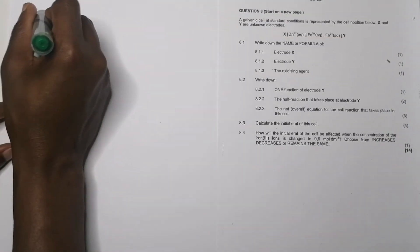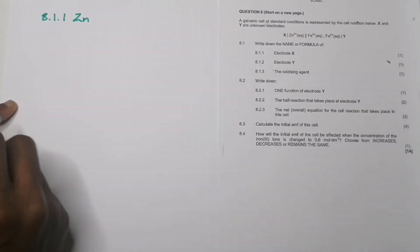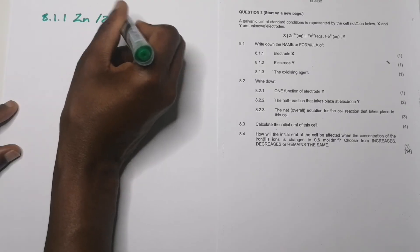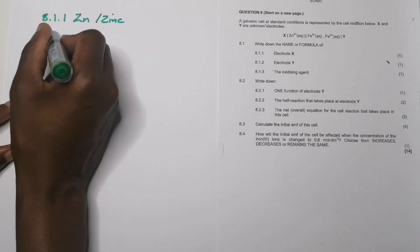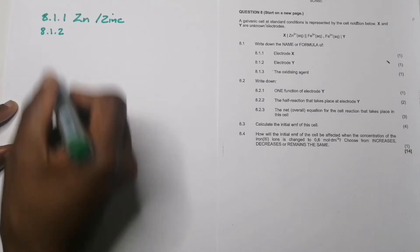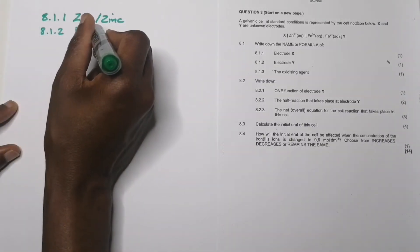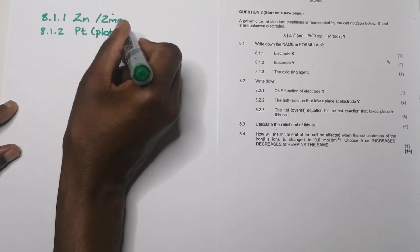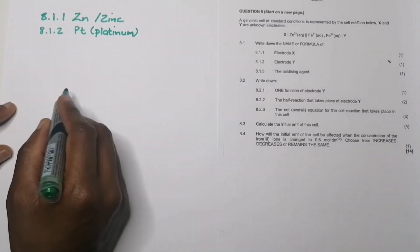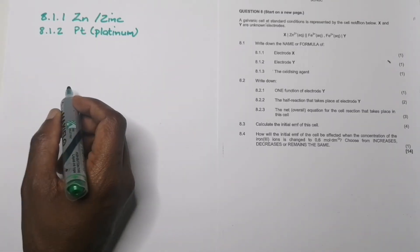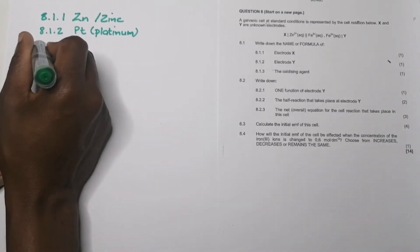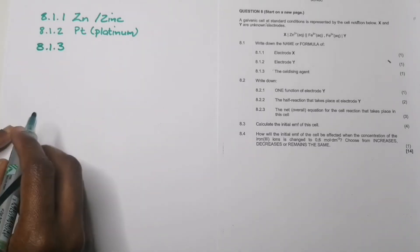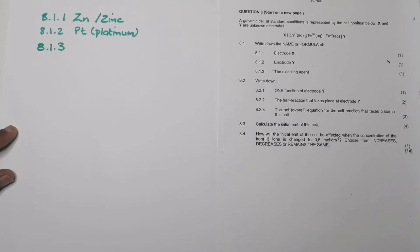For question 8.1.1, electrode X is zinc — you can write it in full as 'zinc' or as the formula Zn. For 8.1.2, electrode Y would be platinum — write the formula Pt or 'platinum' in full. You could also use carbon, but platinum is the most common choice, as it ensures electrical connectivity.